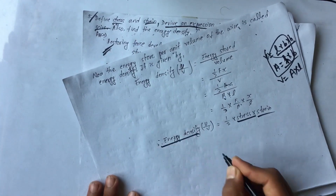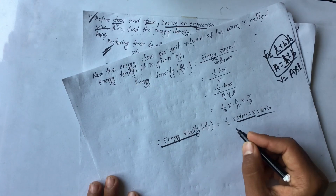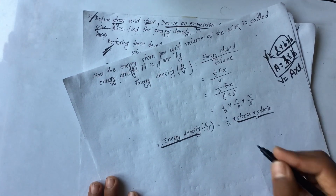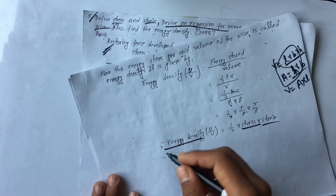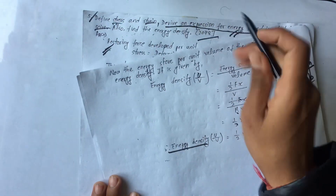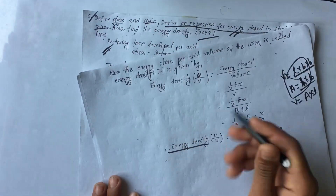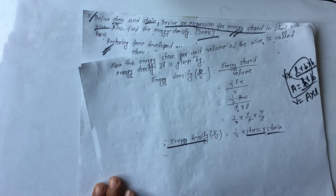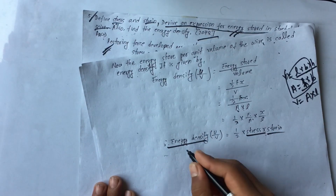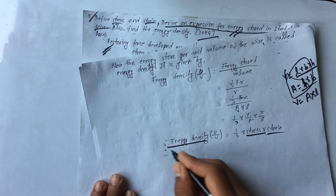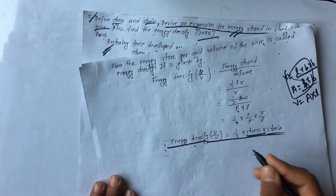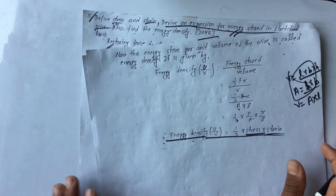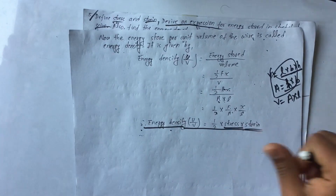So energy density is equal to one by two into stress into strain. We have completed all three parts of this question. This was a six-mark question. Thank you for watching, keep loving.